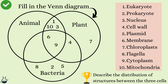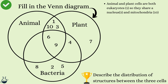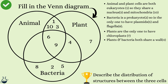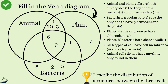The challenge was to describe the distribution of structures between the three cells. We could say: animal and plant cells are both eukaryotes — number 1 — so they share a nucleus (number 3) and mitochondria (number 10). Bacteria is a prokaryote (number 2), so it is the only one to have plasmids (number 5) and flagella (number 8). Plants are the only ones to have chloroplasts (number 7). Plants and bacteria share a cell wall (number 4). All three cell types have cell membranes (number 6) and cytoplasm (number 9). Animal cells do not have anything found only in them, and do not share anything exclusively with bacteria.